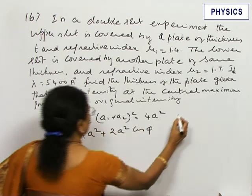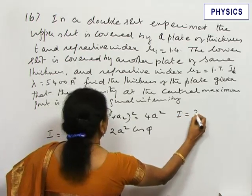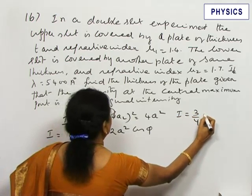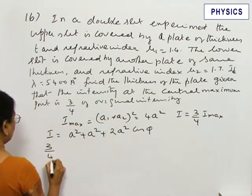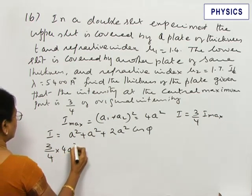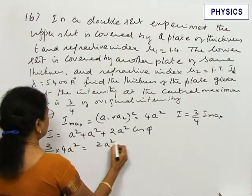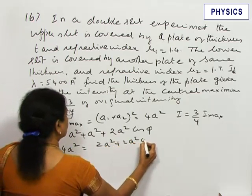Now we are given that the intensity becomes three-fourths of the original intensity I_max. So, substituting 3/4 into 4a² equals 2a² + 2a²cos φ.